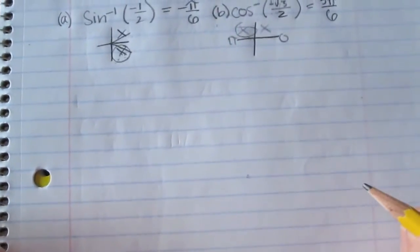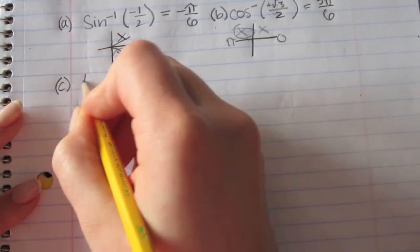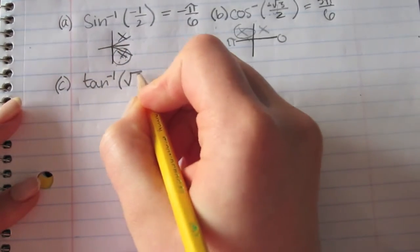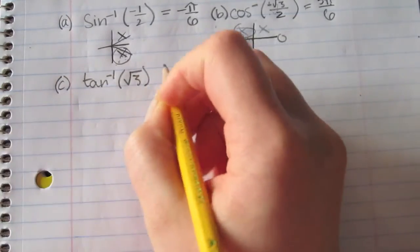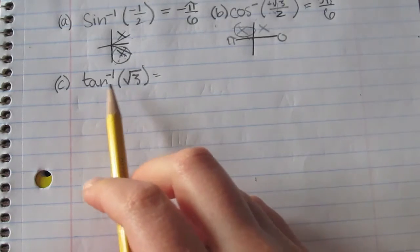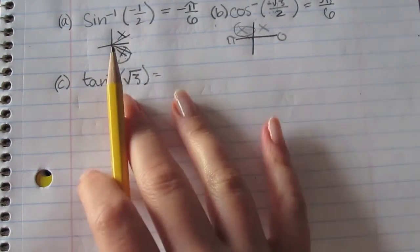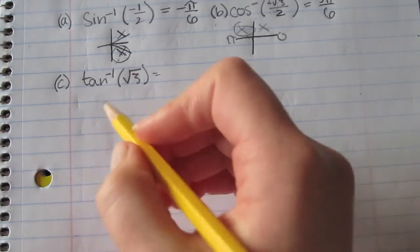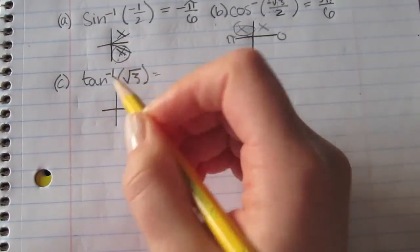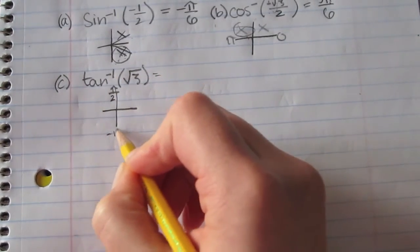For the last one, it's the inverse tangent of the square root of 3. The domain of inverse tangent is all real numbers, so that will work. The range is between negative π over 2 and π over 2.